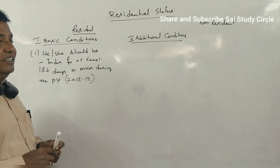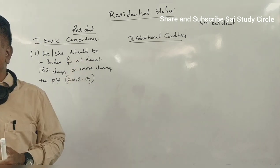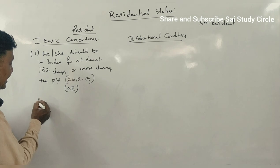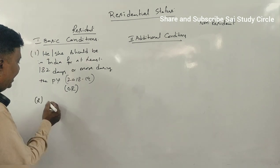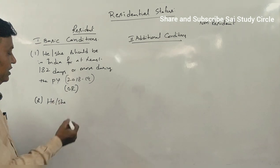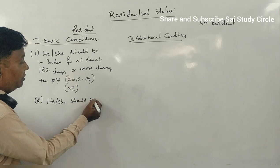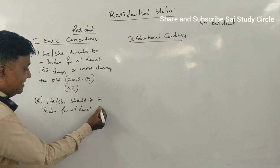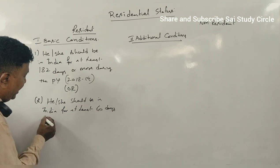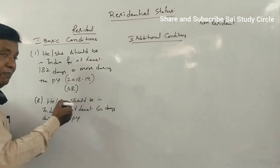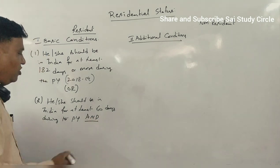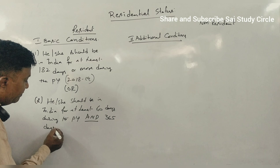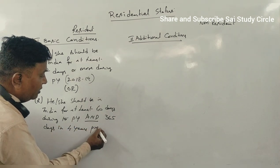You may ask: what happens if a person is not staying in India for 182 days? Is there any alternative? Yes, definitely — we have a second basic condition. The second basic condition is that a person should be in India for at least 60 days during the previous year, and along with those 60 days, the person should also have stayed for 365 days in the 4 years preceding the previous year.